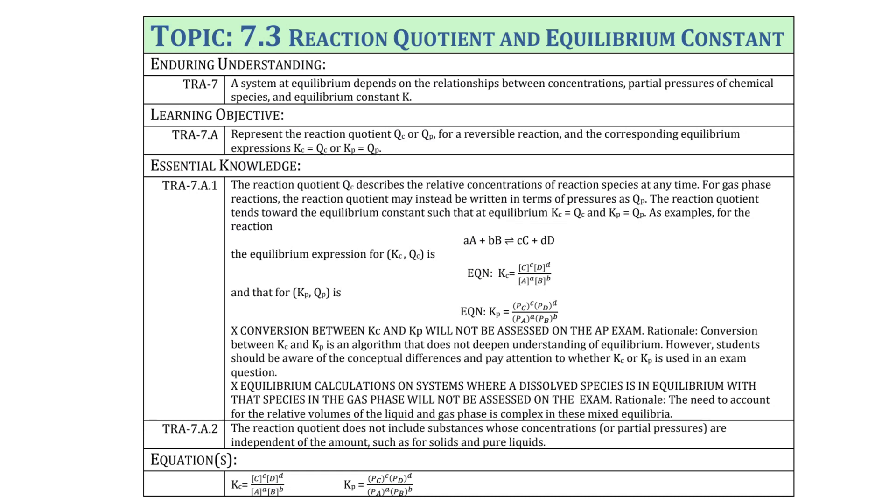Today's objective: be able to represent the reaction quotient for a reversible reaction and the corresponding equilibrium expressions. The reaction quotient QC describes the relative concentrations of reaction species at any time. For gas phases, the reaction quotient may be written in terms of pressure. The reaction quotient tends towards equilibrium constant such that equilibrium KC equals QC and KP equals QP.